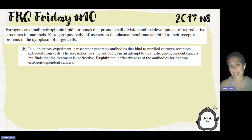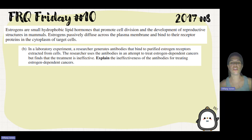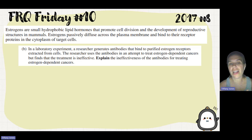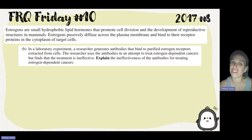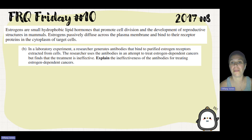Explain the ineffectiveness of the antibodies for treating estrogen-dependent cancers. If the antibodies are polar or hydrophilic, they're not going to be able to pass through the plasma membrane because the receptor is expected to be on the plasma membrane. Since the antibodies can't get through the plasma membrane, they cannot bind to the receptors, and if they can't bind the receptor, they can't inhibit estrogen from binding. That's why they're going to be ineffective.